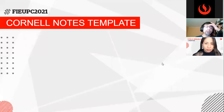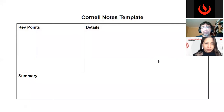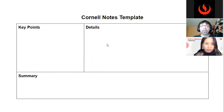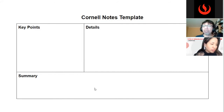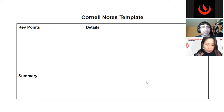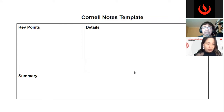El segundo recurso es la plantilla de la Universidad de Cornell para tomar notas. Consta de tres módulos: un primer módulo con los puntos clave de un texto o video, una columna en la que se abunda en detalles, y finalmente un espacio para colocar de manera resumida el contenido revisado en clase o como tarea. Es una plantilla igualmente muy sencilla que permite resumir textos, videos y diferentes actividades.